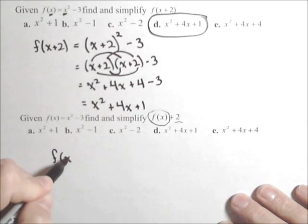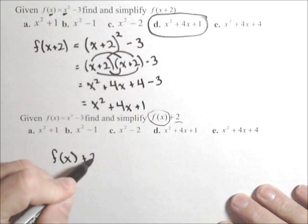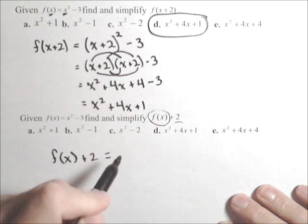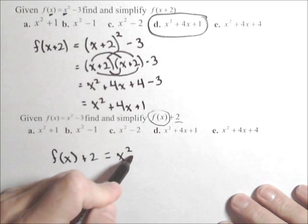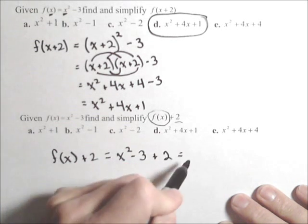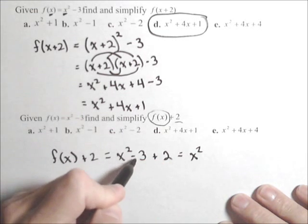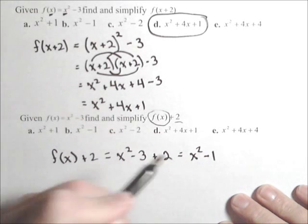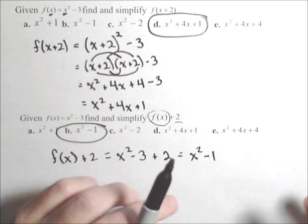So for f of x plus two, we're gonna start with f of x, which we already know is x squared minus three, and add two onto the end. So that's x squared minus three plus two equals x squared minus one. So we have b.